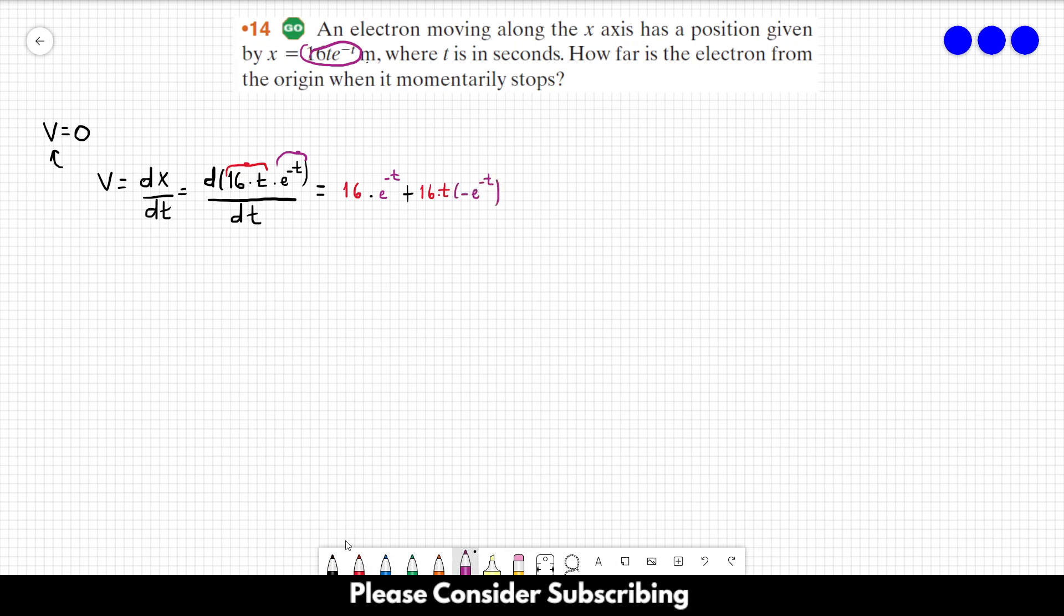So the derivative of the position, which is the velocity, would be 16 e to the power of minus t minus 16 times t times e to the power of minus t. And we can write it like 16 times e to the power of minus t times 1 minus t. So we can write the velocity like this.